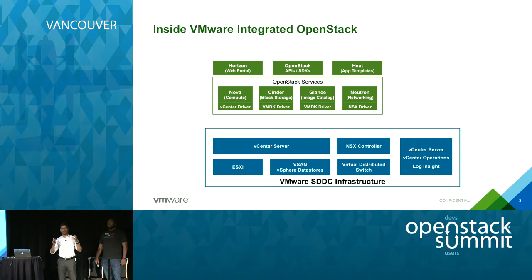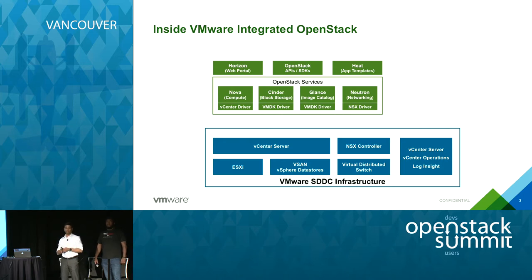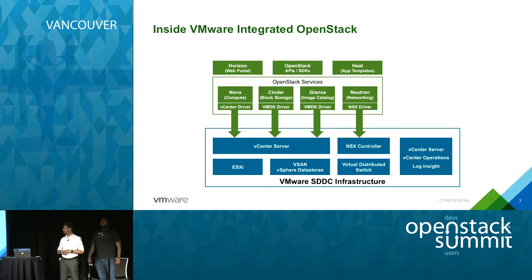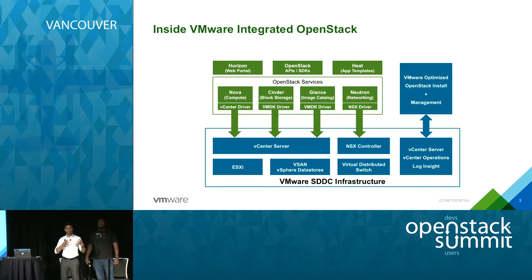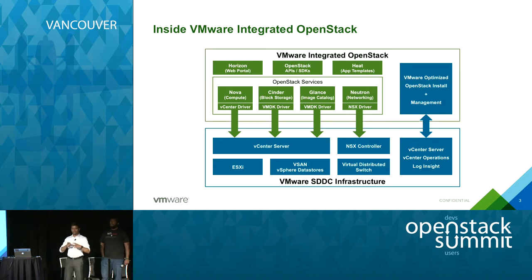We've taken standard OpenStack code from upstream — the exact same OpenStack services and APIs — tested it, hardened it, done bug fixes, and when we do bug fixes we always push them upstream so we don't hold any code back. We have drivers for each component that talk to the underlying infrastructure; for example, the vCenter driver enables Nova to talk to vCenter and provision VMs. We also have a management piece that makes it simple to deploy and operate OpenStack on top of an existing vSphere infrastructure.